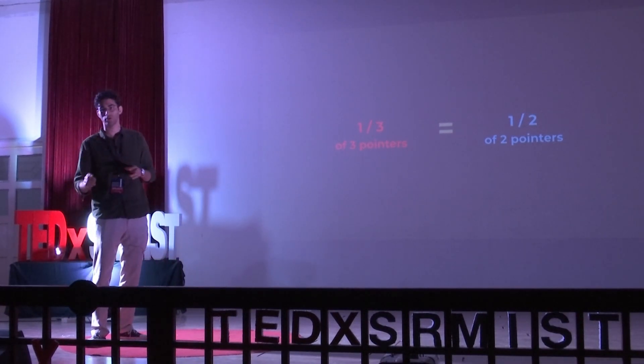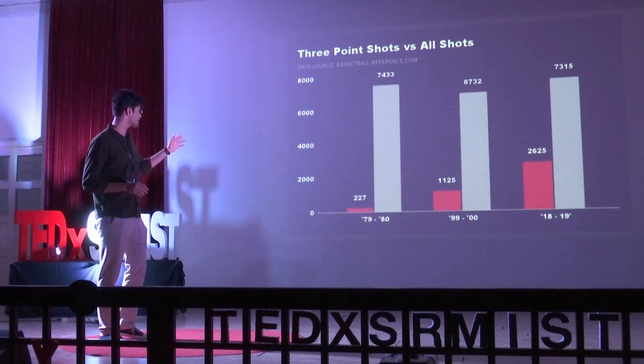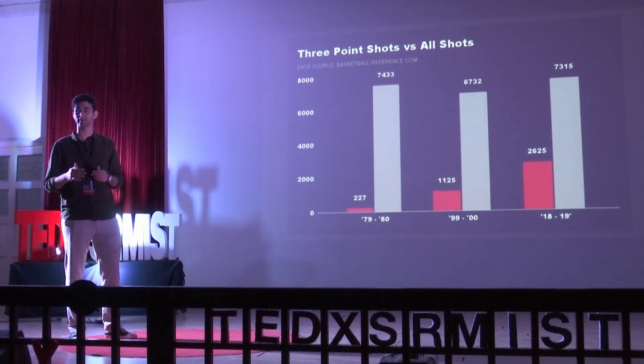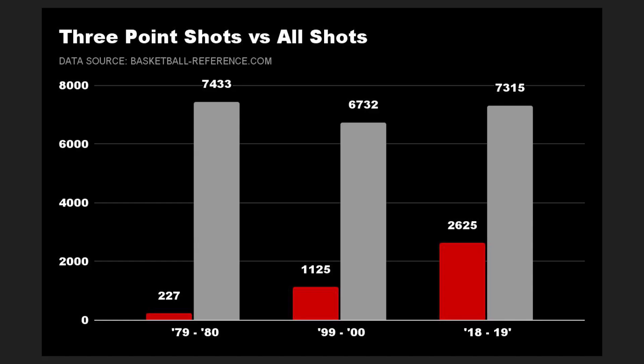The grey bars show the total number of shots attempted, and the red bars show attempts from beyond the 3-point line. In the 1979-80 season when the line was just introduced, only 227 shots were taken from beyond the line out of 7,433 total shots. Compare that to the 2018-19 season, when almost one third of all shots were taken from beyond the 3-point line. This is strong evidence of how analytics have changed basketball.